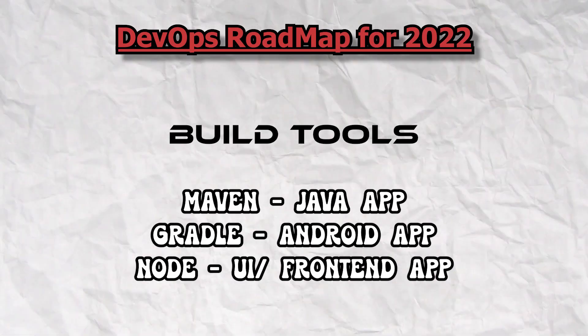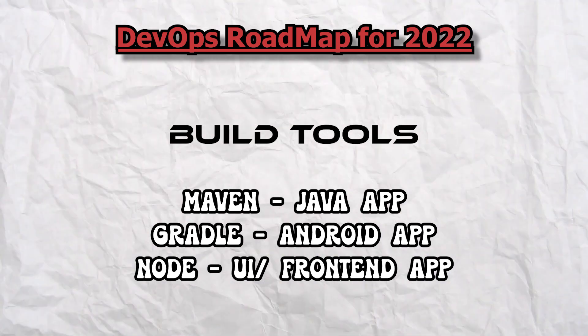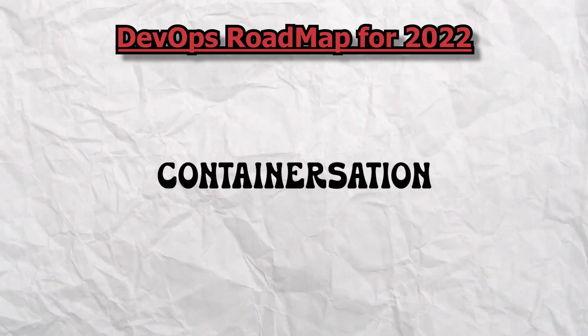Now the build tools — data point four. If you are using a Java application, go with Maven. If you are using an Android application, go with Gradle. If you are doing UI or front-end development, go with Node. All these builds will give you a binary output at the end, which you need to store somewhere. I would not recommend a specific tool here — select the one that matches your organization's tech stack and learn it in depth.